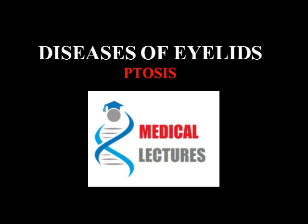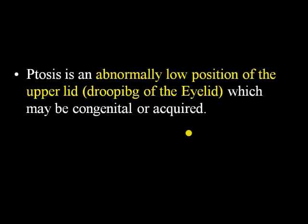Today we are going to discuss a disease of the eyelid known as ptosis, which comes under the heading of malposition of the eyelids. The other two entities included in diseases of the eyelids are inflammation of the eyelids and tumors of the eyelid. Ptosis is an abnormally low position of the upper lid, also known as drooping of the eyelid, which may be classified as congenital or acquired.